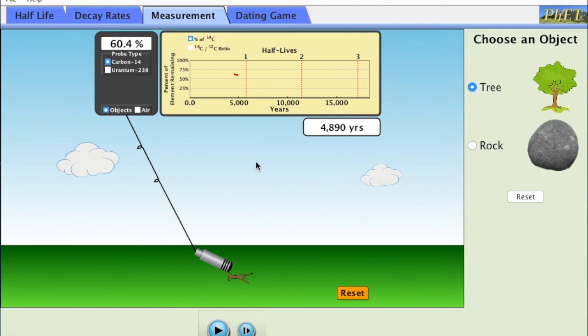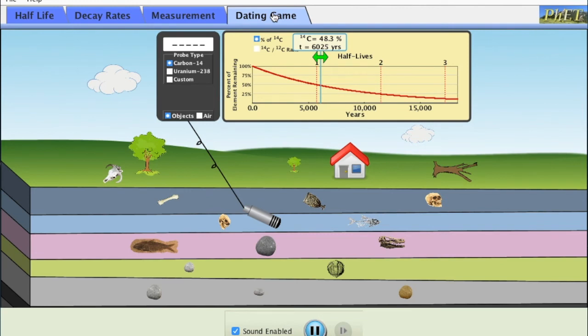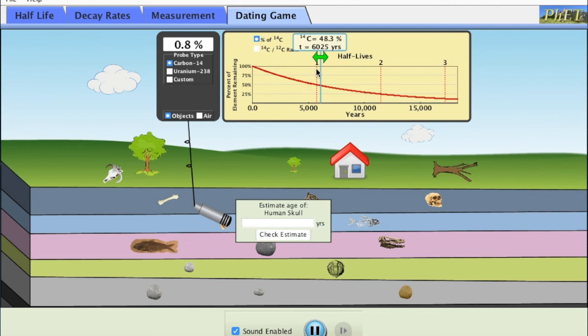Now we're going to head on over to the actual dating game portion of this. Here we have where we can select carbon, uranium, or a custom one that we get to change just like we did on that first tab. We also have another sliding bar on this graph so that we can have a certain percentage tell us exactly the number of years. We don't actually have to do the math to calculate that. We have a probe like we did in the measurement tab.